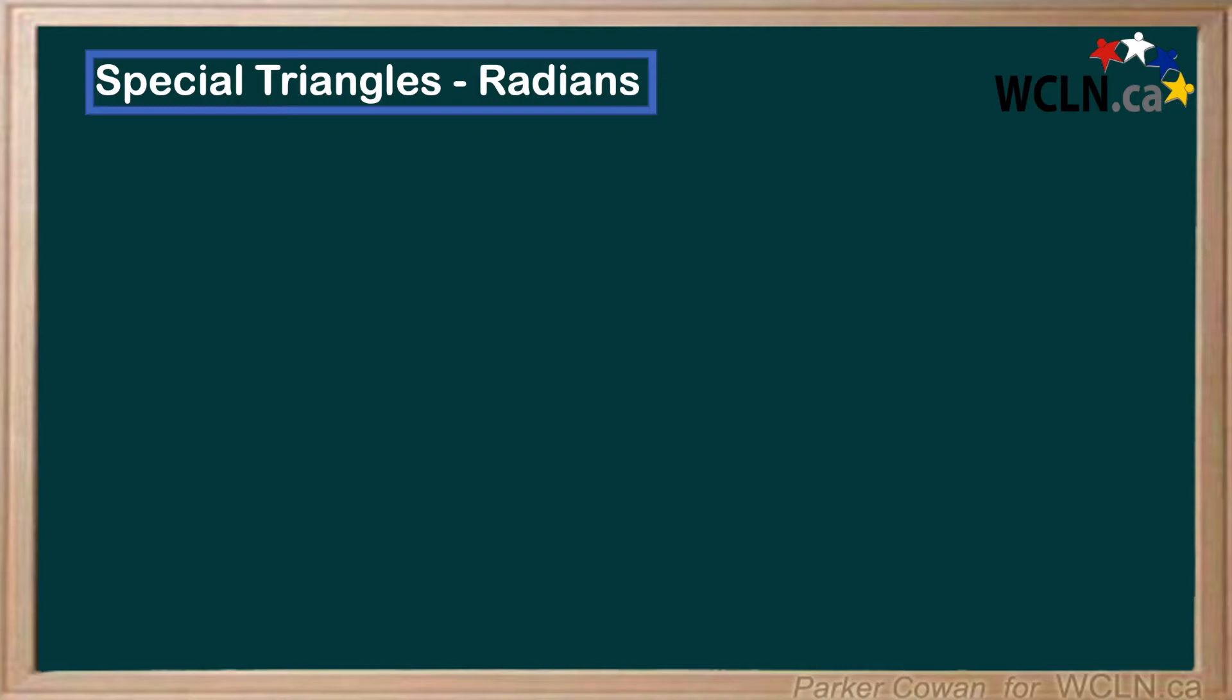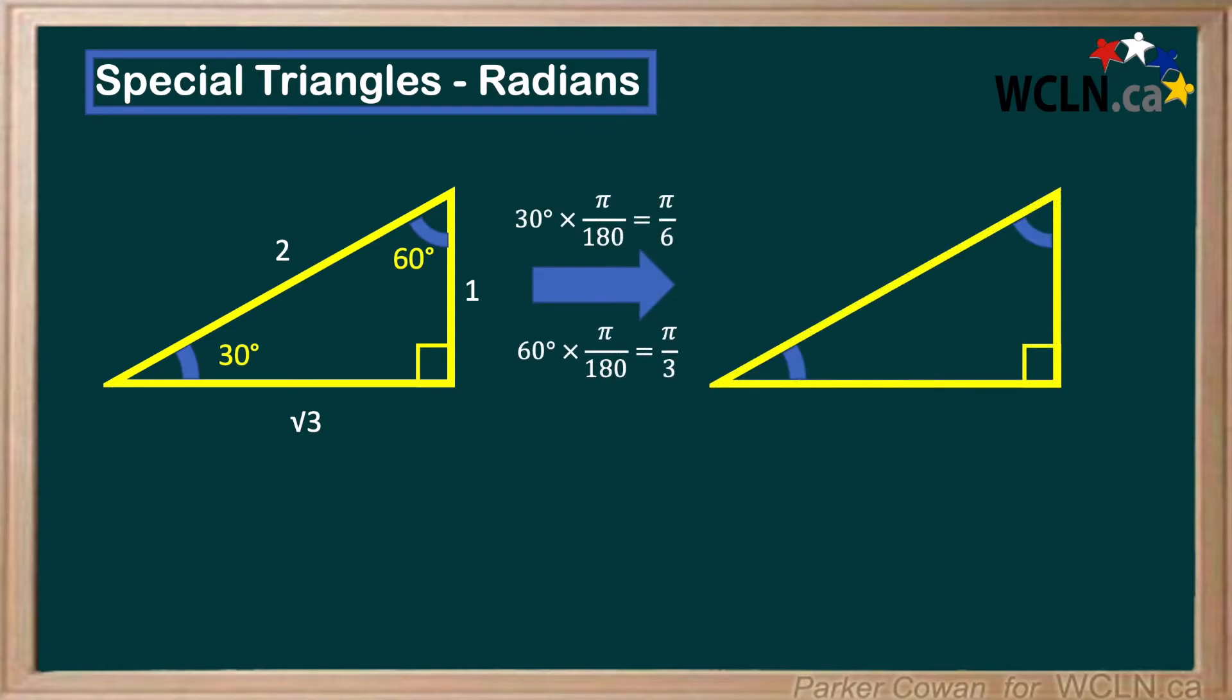Let's do the same thing for the 30-60-90 triangle. Converting these angles to radians gives us the following triangle. Sometimes it's easy to forget which angle is which though, so here's a little trick. Pi over 3 is larger than pi over 6, and 60 degrees is larger than 30 degrees, right? Thus, we can always conclude that pi over 3 must be 60 degrees, since it's the bigger angle.